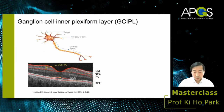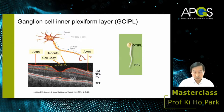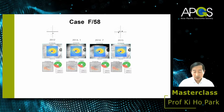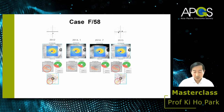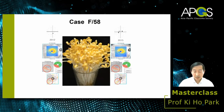I frequently compare the retinal ganglion cell to a bean sprout. In the case of the 58-year-old lady, there was a large GCIPL loss in the macular area compared to the smaller RNFL defect at the stage of normal visual field. This large area of GCIPL defect compared to the RNFL defect can be explained by the bean sprout model, as the volume of the cell bodies is larger than the volume of the axons.